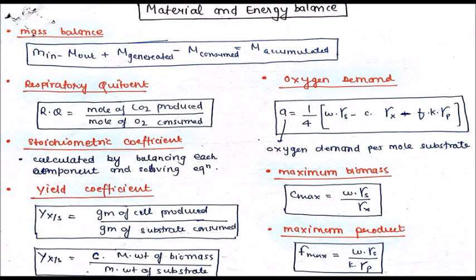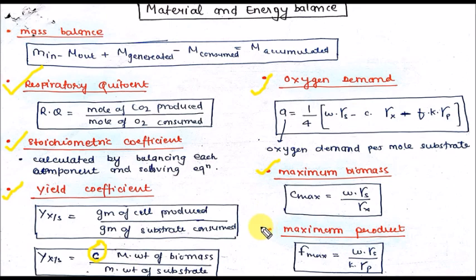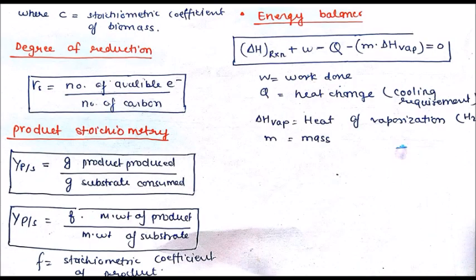Now let's come to material and energy balance. Here is the formula for material balance — the mass balancing steady-state equation. You can calculate the respiratory quotient from this formula: moles of CO₂ produced divided by moles of oxygen consumed. You can calculate maximum biomass and maximum product with the stoichiometric formulas shown. These include degree of reduction and product stoichiometry, discussed in previous videos.